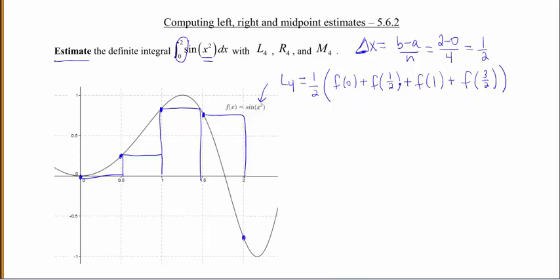So that means I'm going to be taking these x values and I'm going to be plugging them into my function. So that gives me 1 half. Then I'm going to have the sine of 0 squared, which is 0. Plus the sine of a half squared, or 1 fourth. Plus the sine of 1 squared, which is 1. Plus the sine of 3 halves squared, which is 9 fourths.